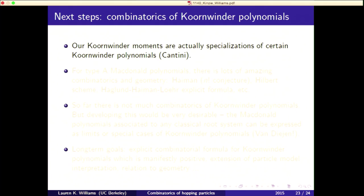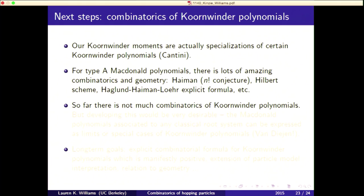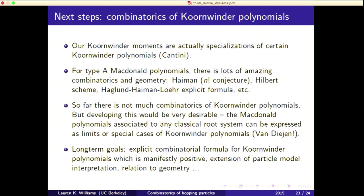The Koornwinder moments are specializations of Koornwinder polynomials, which are type BC Macdonald polynomials. The type A case has been studied extensively, with amazing work including Haiman's n-factorial conjecture and connections to the Hilbert scheme, but almost nothing exists yet for Koornwinder. A long-term goal is to completely understand those polynomials combinatorially, extend the particle model interpretation, and relate everything to geometry.